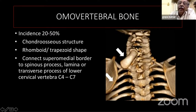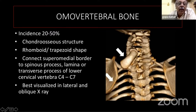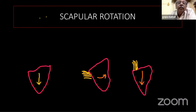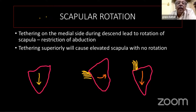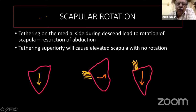The omovertebral bone connects the supramedial border of the scapula to the spinous process, lamina, or transverse process of the cervical vertebra between C4 and C7. Some parts of it may be fibrous, some cartilaginous, and there may be a joint in between. It is best visualized on lateral and oblique X-rays. Regarding scapular rotation: if the scapula simply descends without tethering, there is no rotation. But with medial tethering, it starts rotating, restricting abduction. Tethering superiorly causes only elevation without rotation. Medial tethering causes the scapula to rotate so that the glenoid faces downwards, leading to restriction of movement.